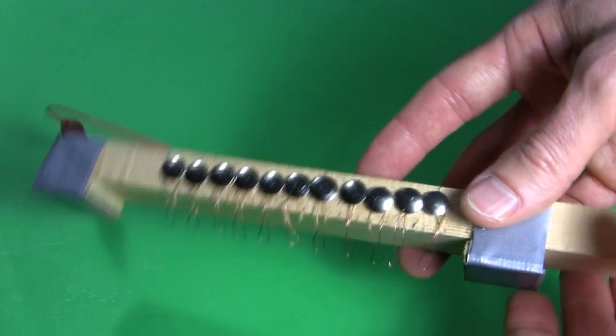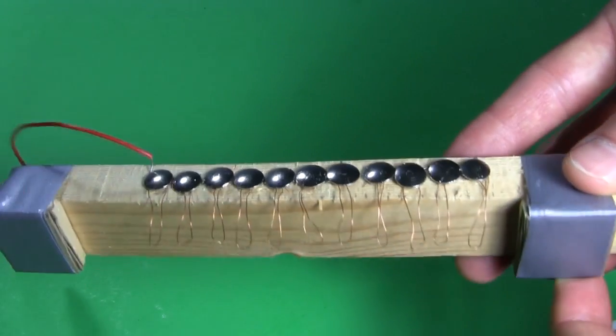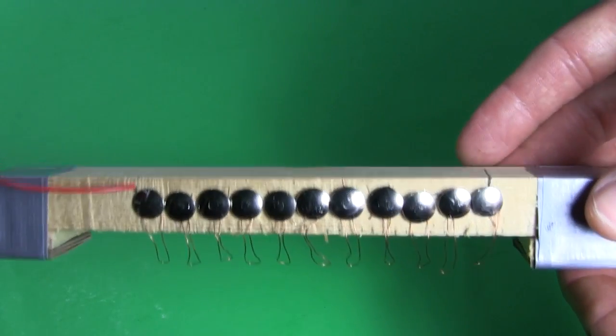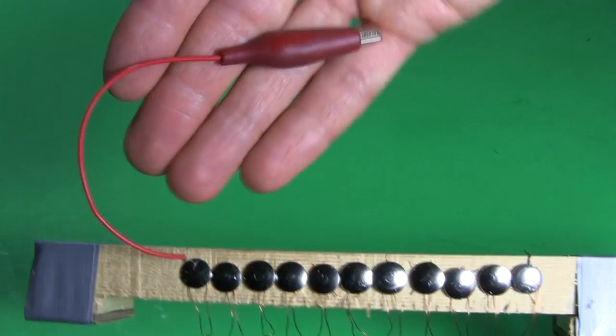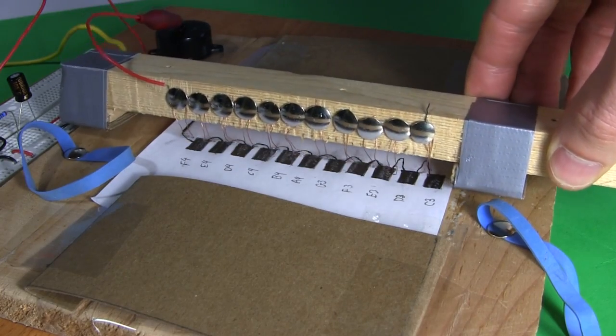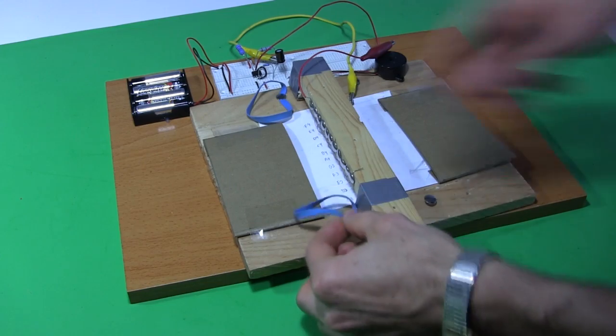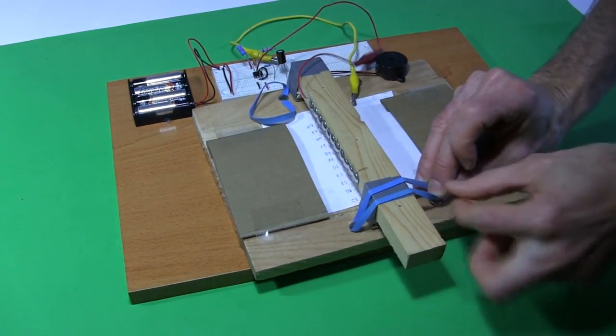Then there's this. There are 11 pencil marks, and for each one there's a loop of bare wire hanging down from these thumbtacks. They're all connected to this one wire going to this alligator clip. I'll put it down so that the wire loops all touch their marks. Then I'll fix the whole thing in place with these rubber bands.